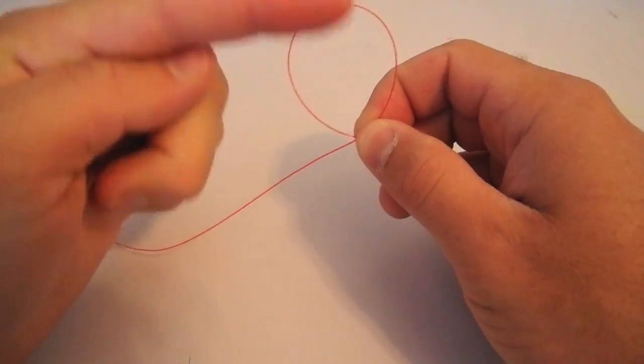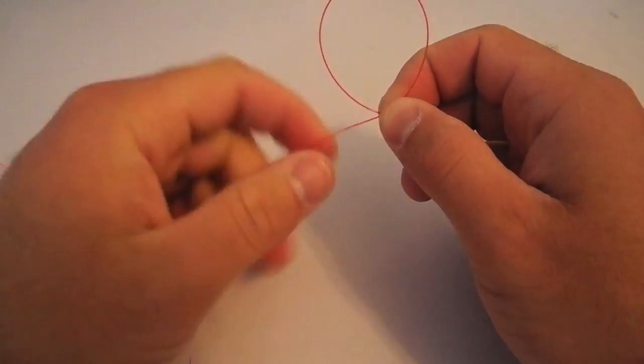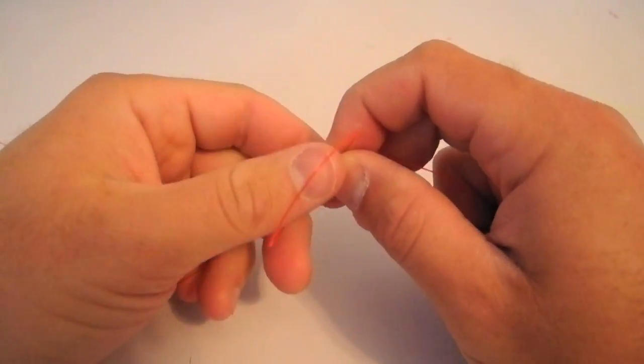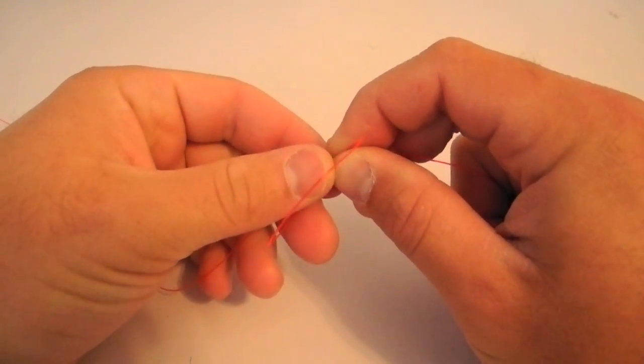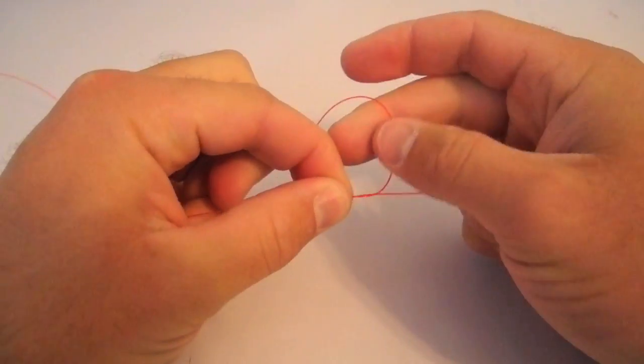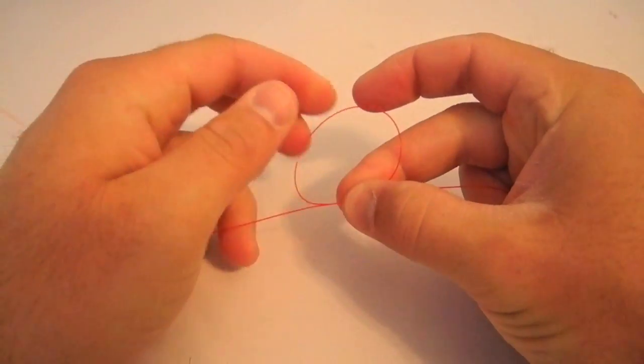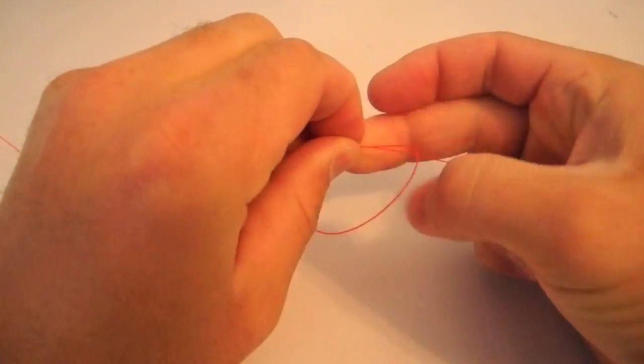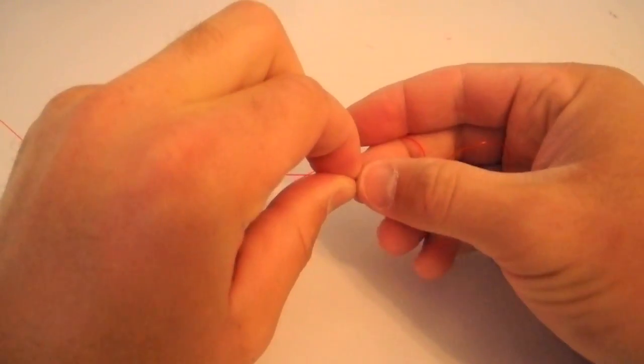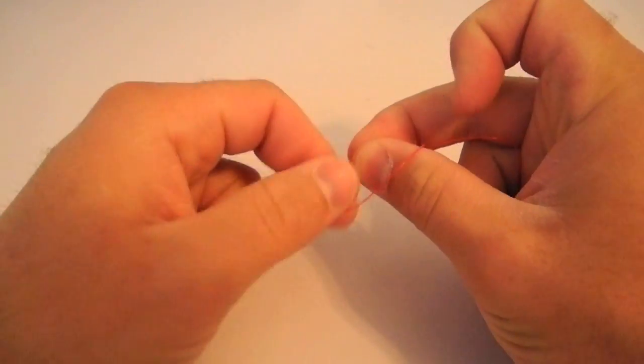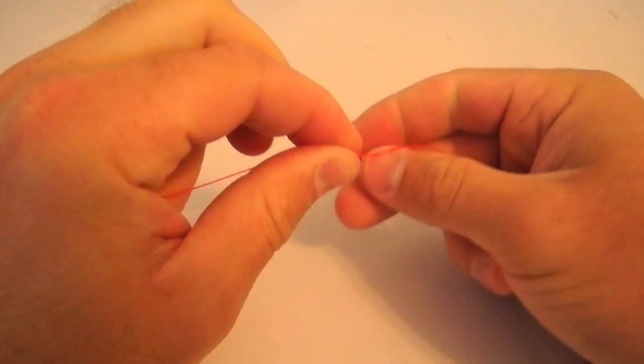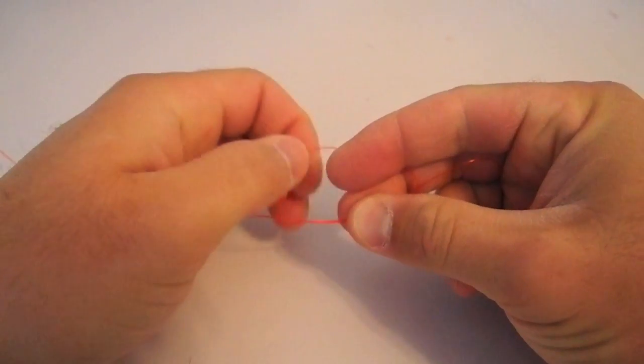Now what I'm going to try to do is wrap this loop around the standing line several times. So I'm going to do that and each time I rotate it around I'm going to pinch the middle of it, and I kind of do so by just switching hands. And you can see it's starting to twist around that standing line there.